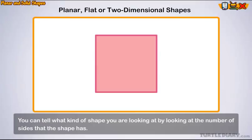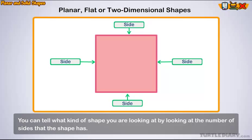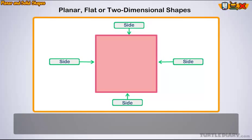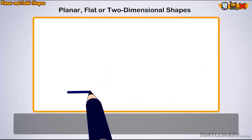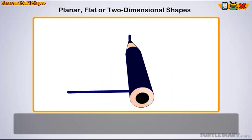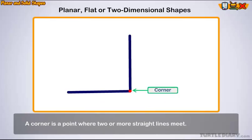You can tell what kind of shape you're looking at by looking at the number of sides that the shape has. A side is the line that makes a two-dimensional shape. A corner is a point where two or more straight lines meet.